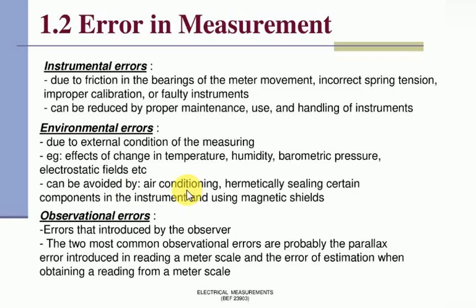Observational errors are errors that are introduced by the observer. The two most common observational errors are probably the parallax error introduced in reading a meter scale and the error of estimation when obtaining a reading from meter scale.